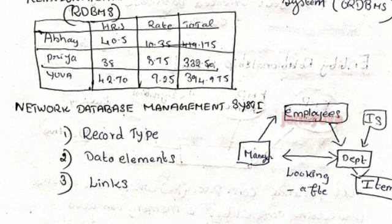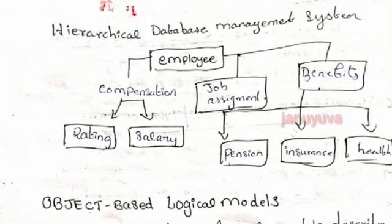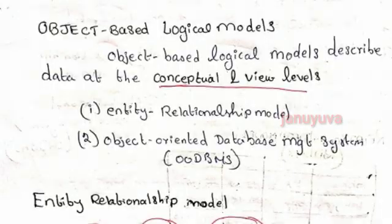Hierarchical database — this has one employer at the top, with employees below. Employee compensation includes salary and benefits. Under compensation: salary and benefit nodes. Under job assignment: pension and benefit. This is the hierarchical database structure.